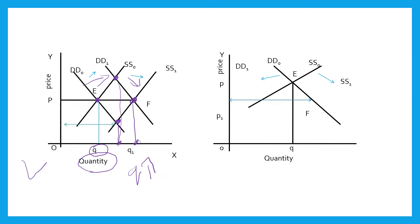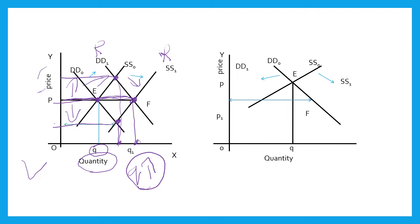What will be the effect on price? When you extend from the new equilibrium, you can observe that price may increase, price may decrease, or it may remain constant. So, when both demand and supply curve shift towards the right side, quantity will increase, but price may increase, may decrease, or may remain constant.